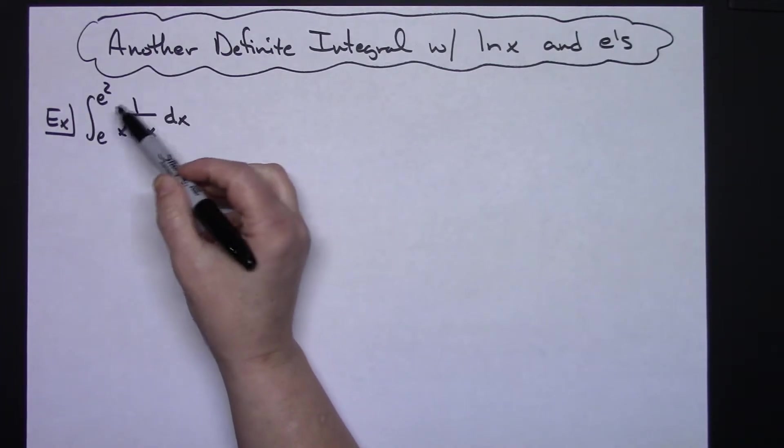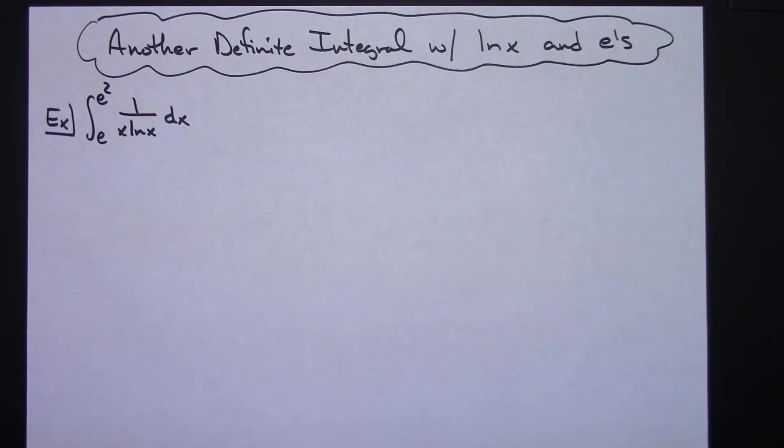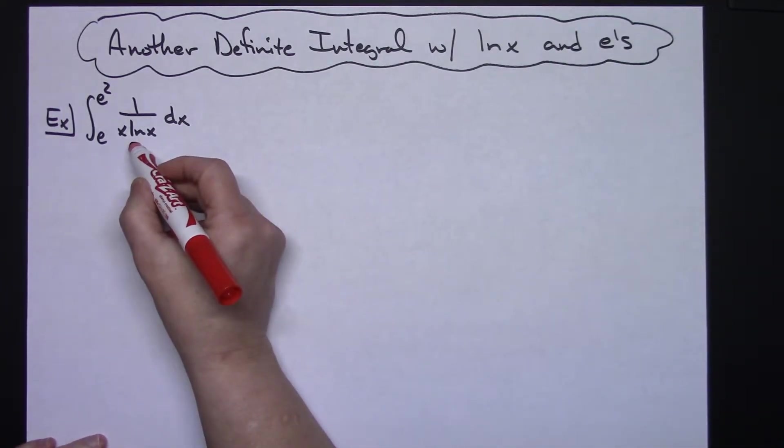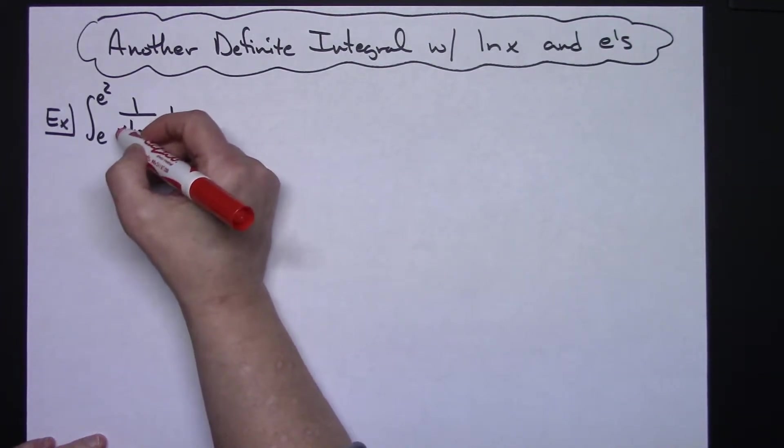Looking at this, you're going to realize that you need to do a u substitution. I'm going to let my u be the natural log of x because its derivative is going to be 1 over x.